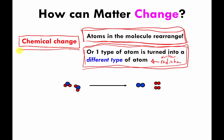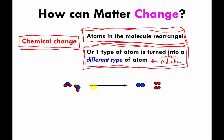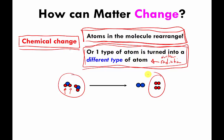Mostly we're going to focus on when the atoms in a molecule rearrange who they're attached to — that's a type of chemical change. This is illustrated in a cartoon: on the left side of the arrow, there are two molecules, each consisting of three atoms — a big blue one attached to two little red ones. Another big blue one also attached to two little red ones.